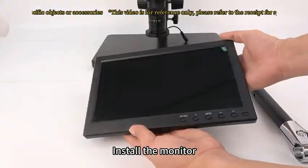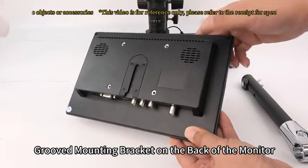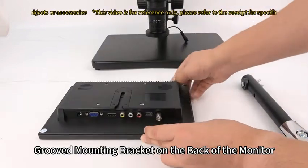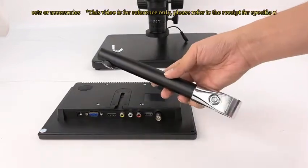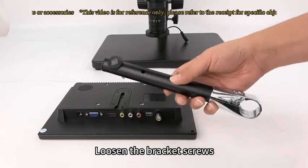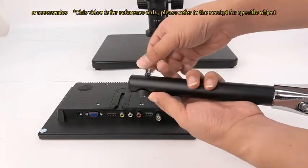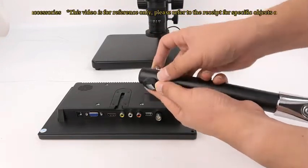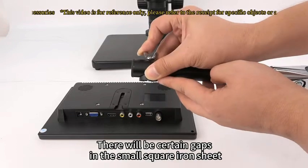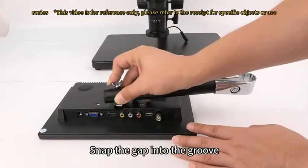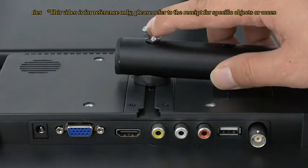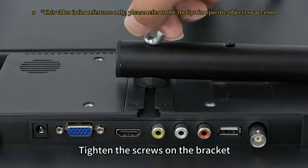Install the monitor. Gloved mounting bracket on the back of the monitor. Loosen the bracket screws. There will be certain gaps in the small square iron sheet. Snap the gap into the groove. Tighten the screws on the bracket.